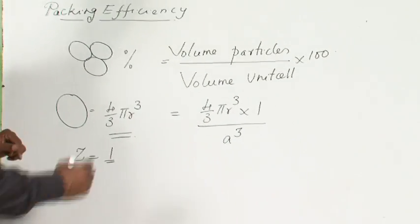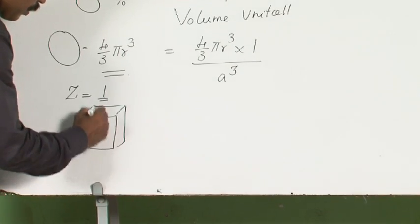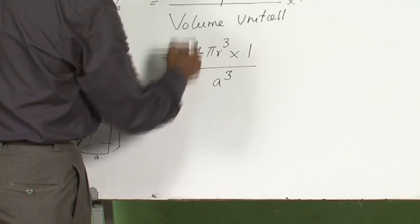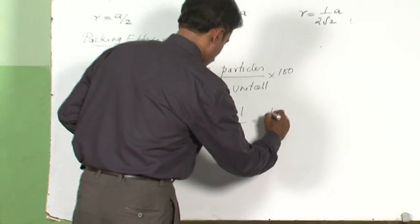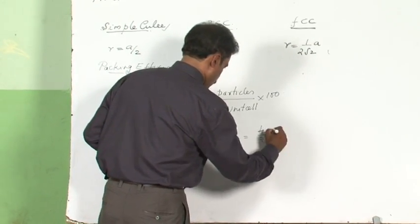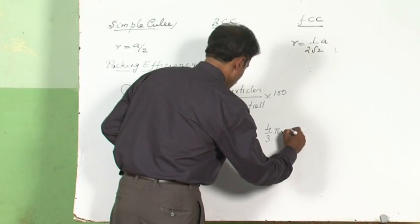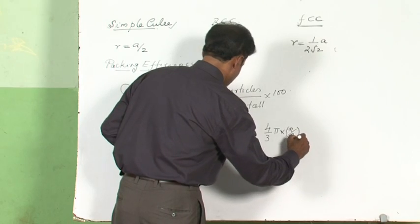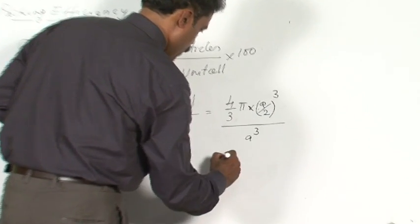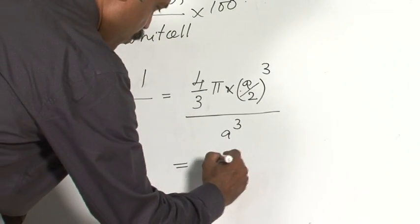The total volume of the unit cell is a cube, where a is the edge length, so the volume is a³. This gives us the packing efficiency. We substitute the value of r: in the case of simple cube, r = a/2. Substituting, it becomes (a/2)³ divided by a³, which works out to 52%.